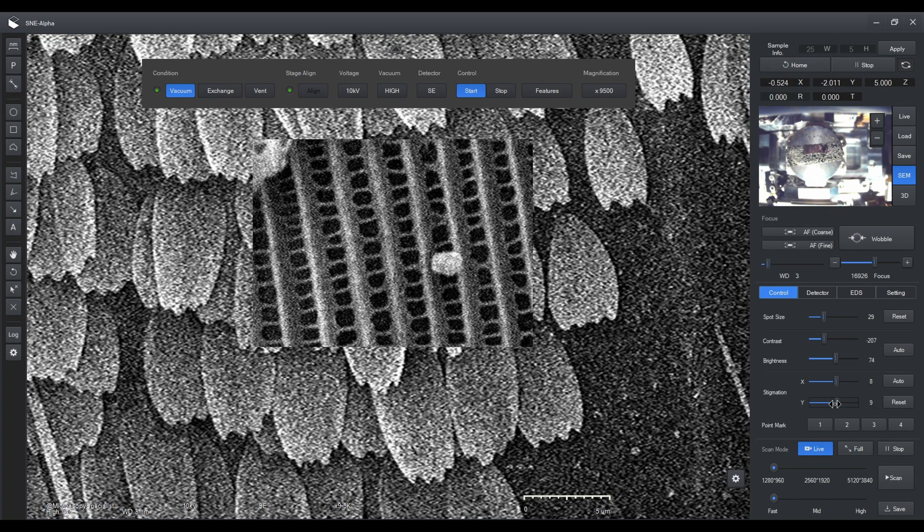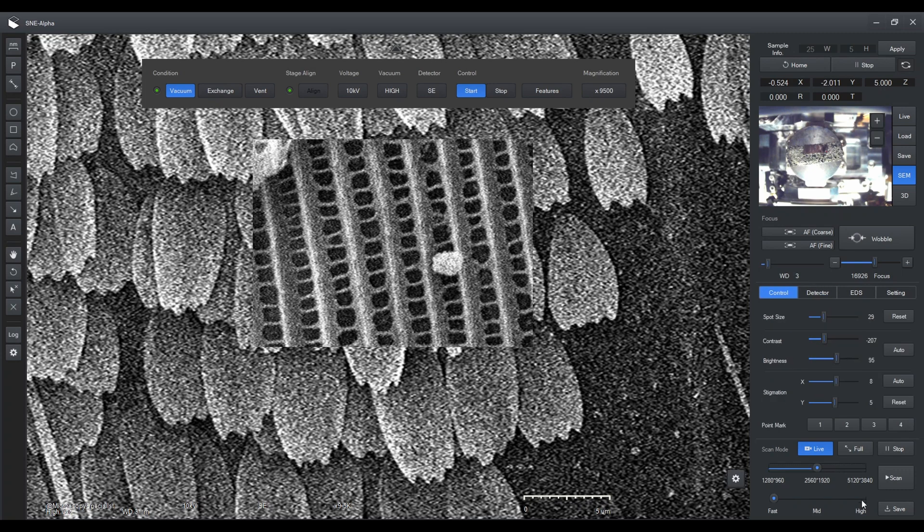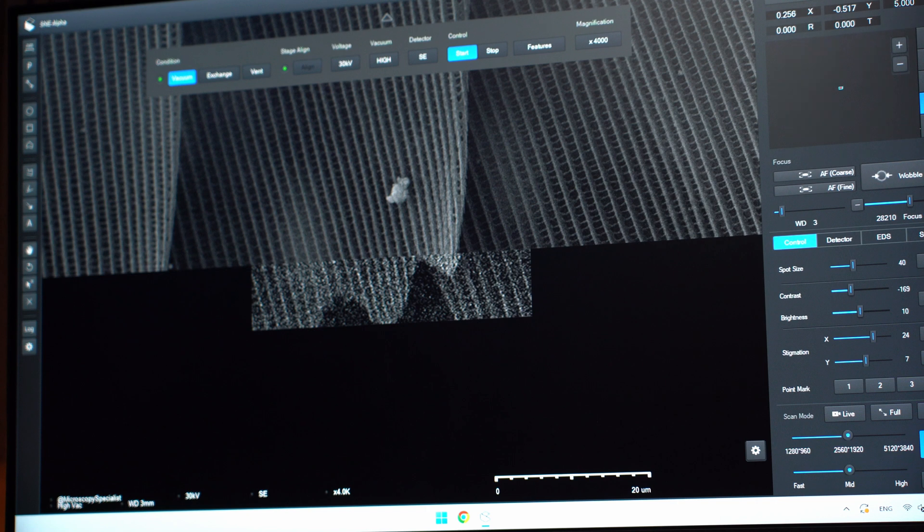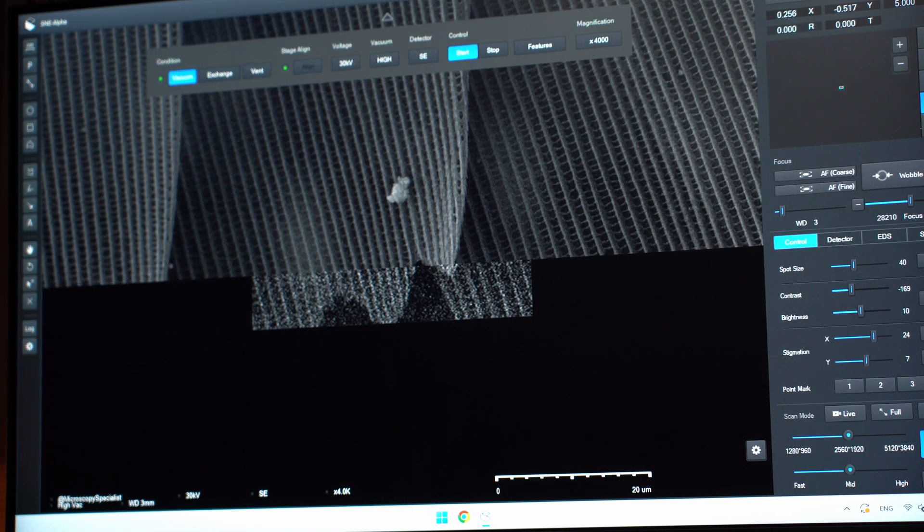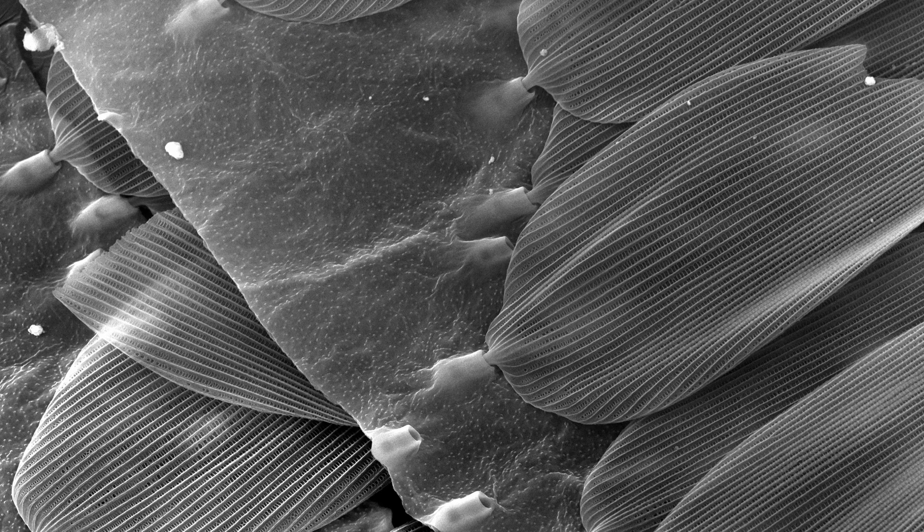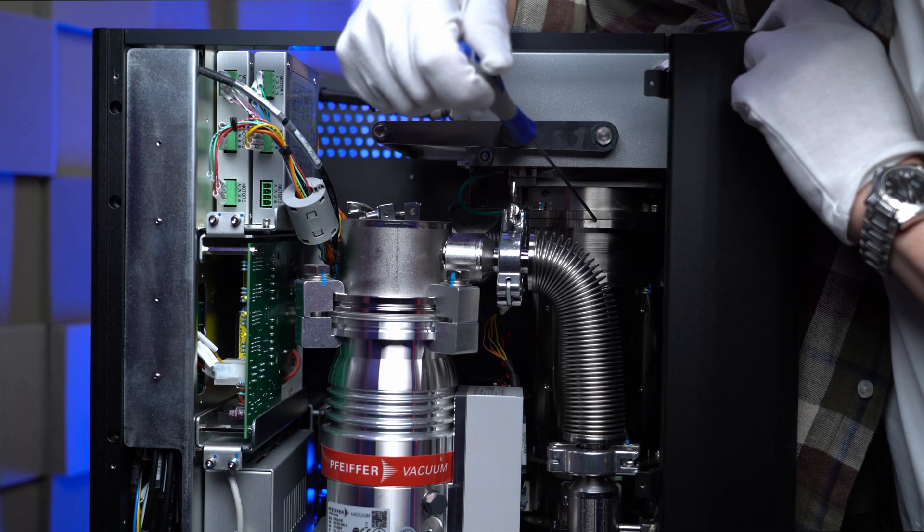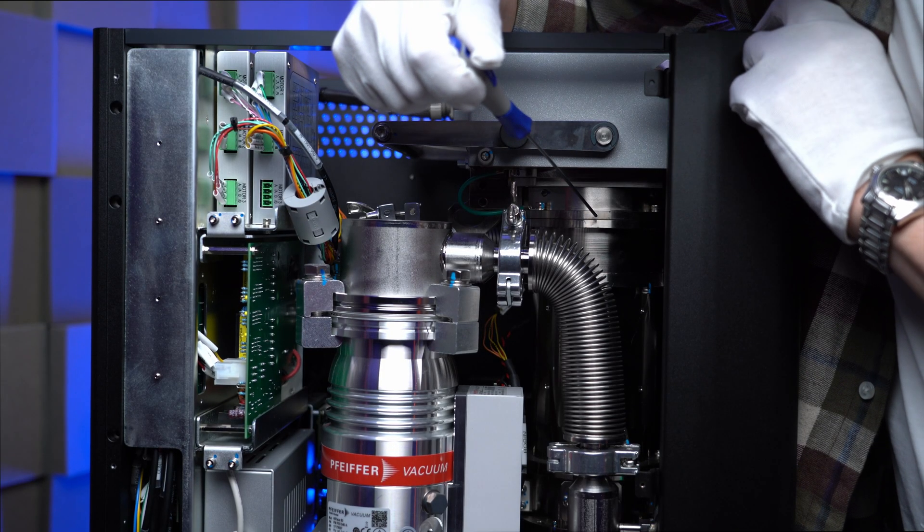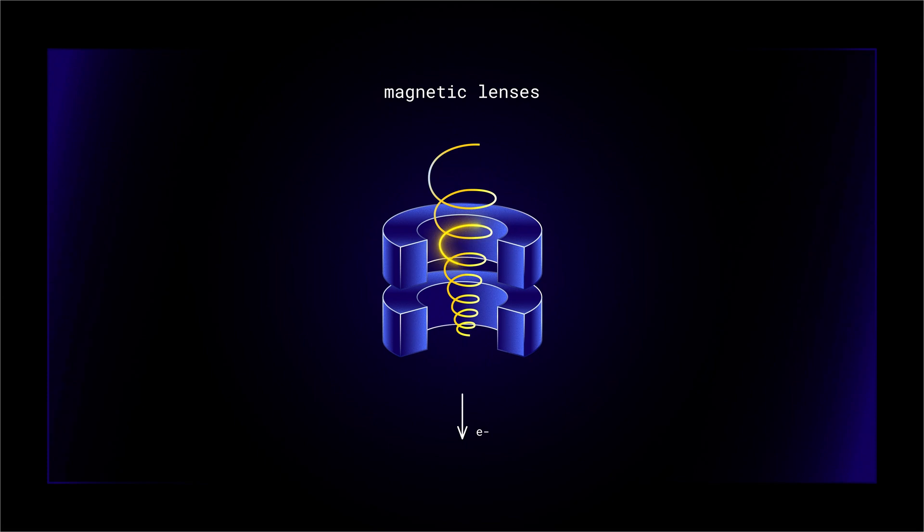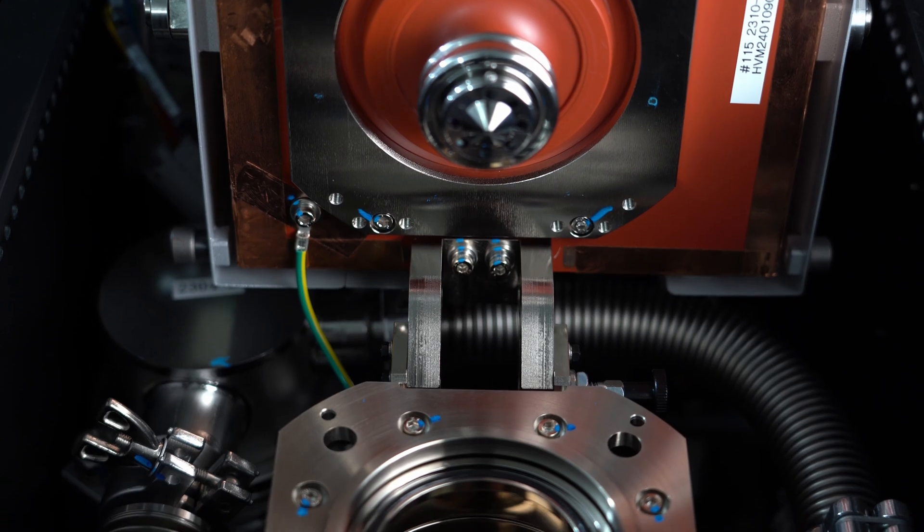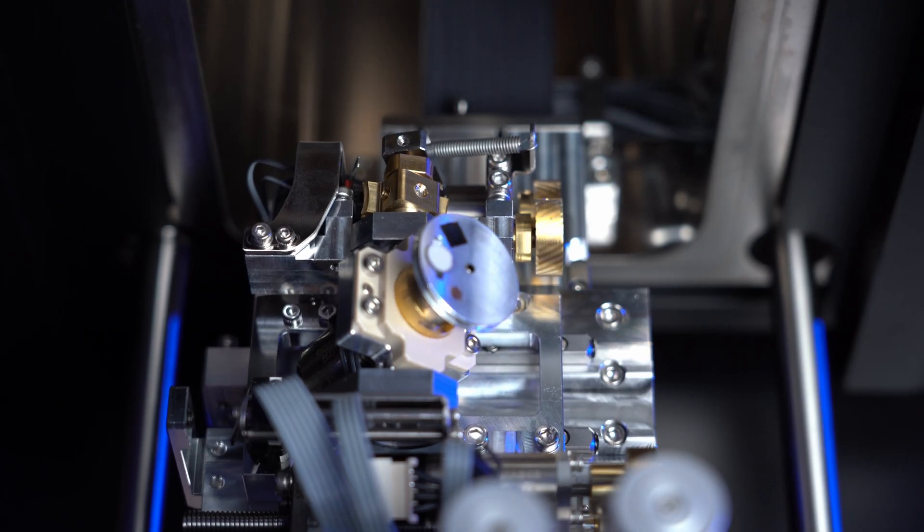This microscope has a motorized stage so we can tilt and rotate the sample inside. The image is created using an electron beam instead of light, and since it's a monochrome source, all the images are black and white. If you're curious how this electron microscope works, check out my other video where I break it down and show you how I set it up step by step.